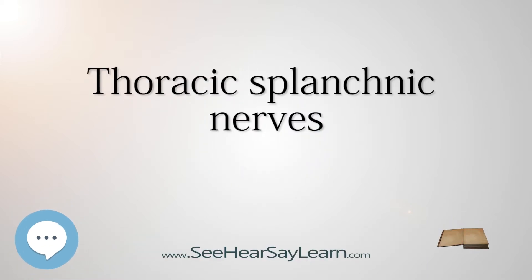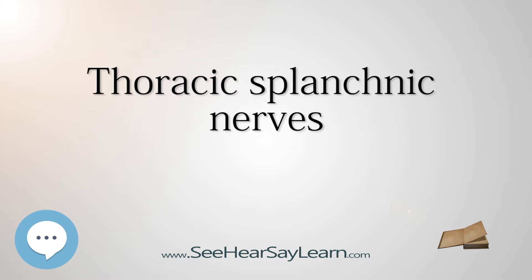Thoracic splanchnic nerves are splanchnic nerves that arise from the sympathetic trunk in the thorax and travel inferiorly to provide sympathetic innervation to the abdomen. The nerves contain pre-ganglionic sympathetic and general visceral afferent fibers. There are three main thoracic splanchnic nerves.